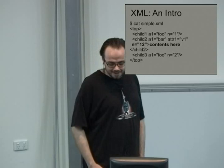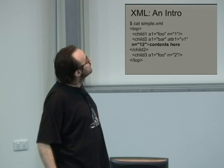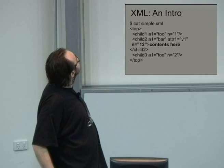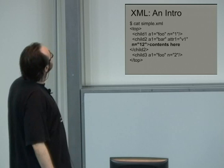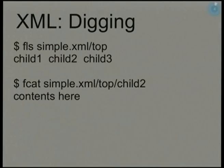Starting from the very beginning: if you have a plain XML file with an attribute n equals 12 and the contents of one of the XML elements, if you just run FLS — no need to mount — you just LS straight into an XML file and it shows you the contents of that top XML element. And if you just cat an XML element as a file, you get the contents of that element.